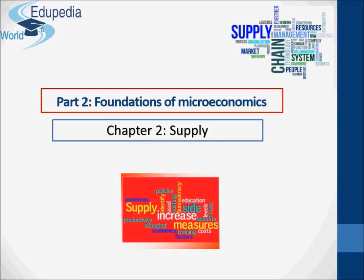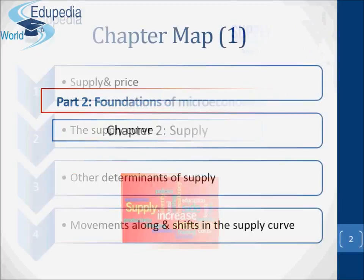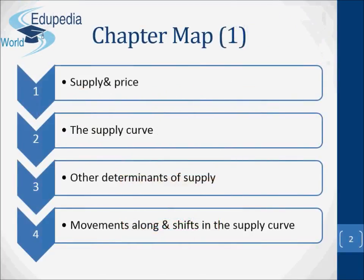Hello everyone and thanks for watching Ediopedia World videos. In this chapter, we are going to analyze and talk about supply. We are going to start by defining supply and price and the relationship between them. Then we are going to talk about the supply curve and discover the other determinants of supply. Finally, we are going to talk about the movements along and shifts in the supply curve. So let's get started.